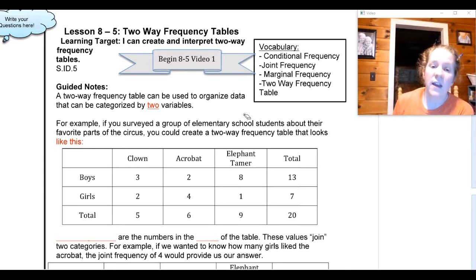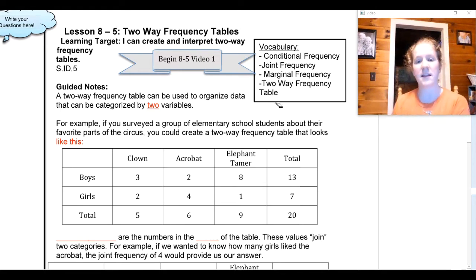For example, if I surveyed a group of elementary school students about their favorite parts of the circus, then I could create a two-way frequency table that breaks them down into subgroups of boys and girls and also breaks them down into subgroups of people who like clowns best, people who like acrobats best, or people who like the elephant tamer the best.